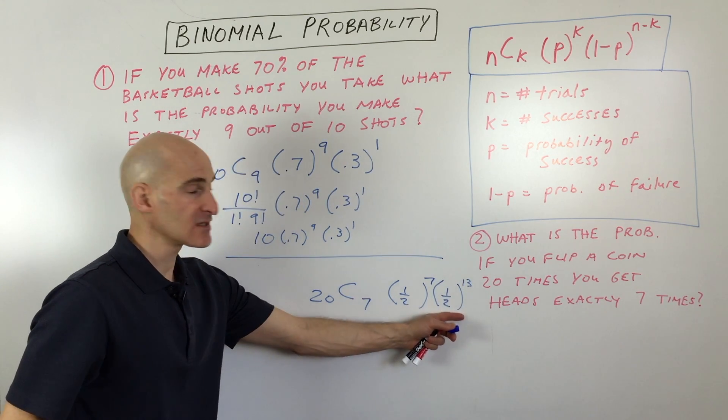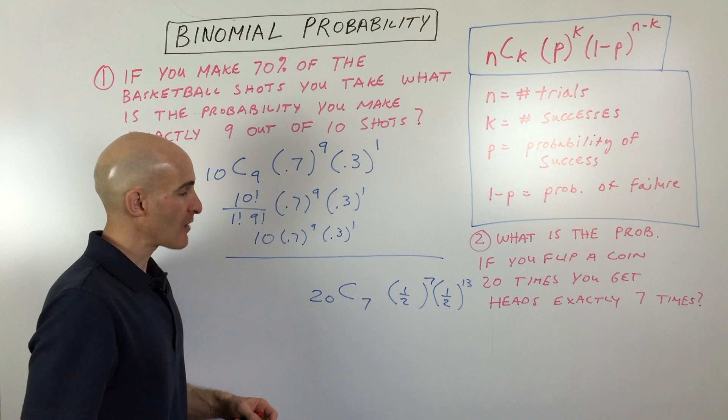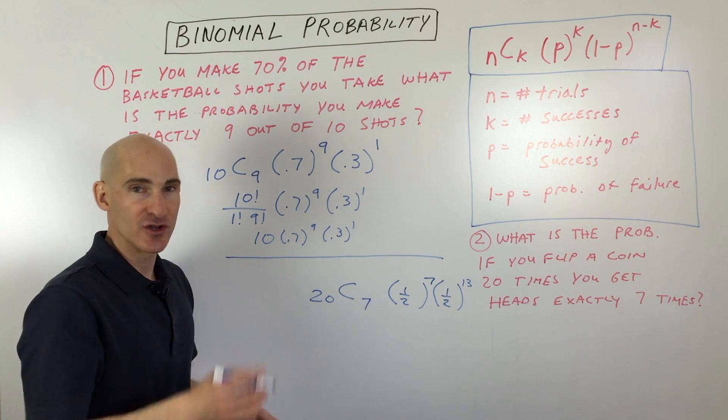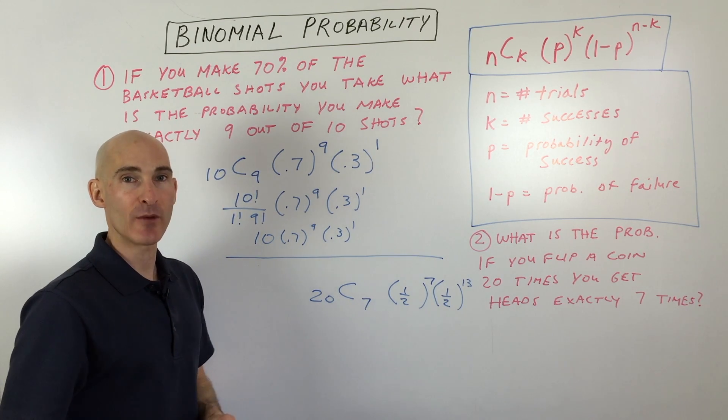So if you simplify this quantity, you're going to get the probability as a decimal. And then you can convert it to a percentage if you want to talk about percent chance.